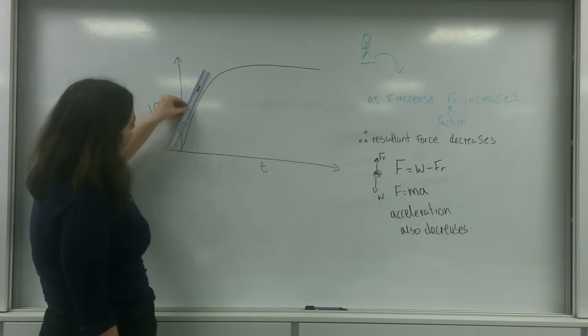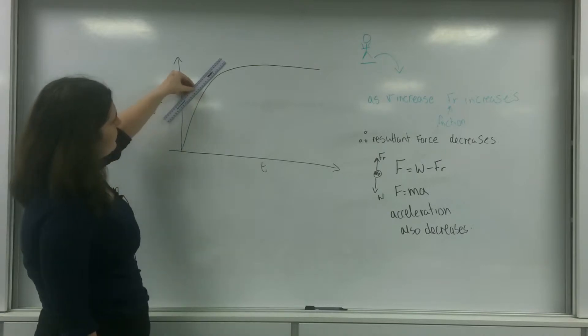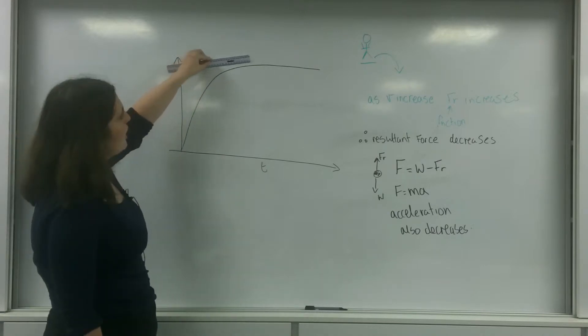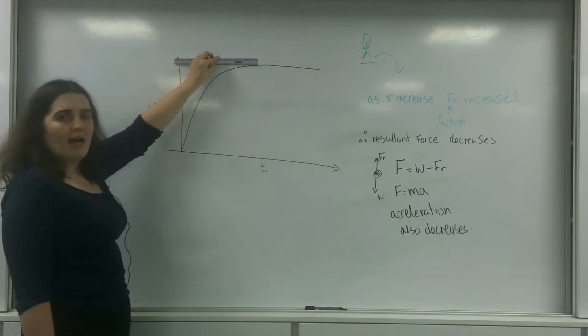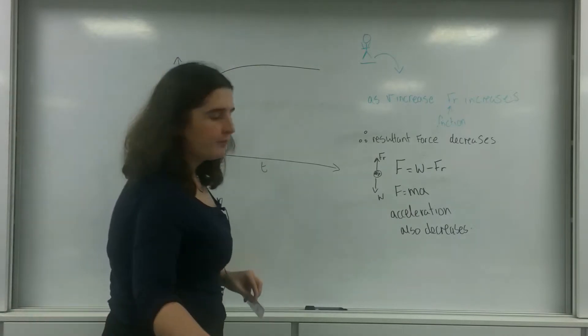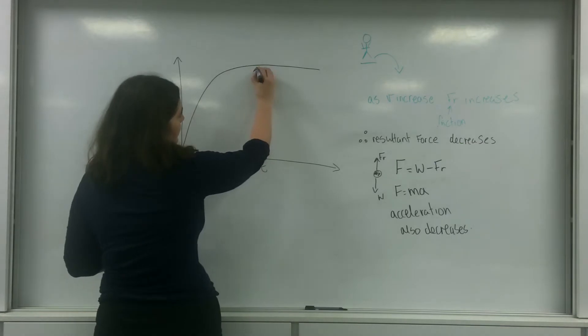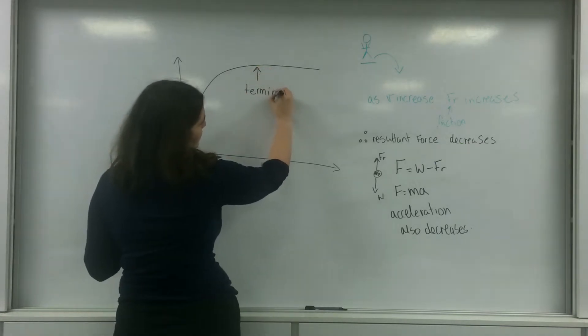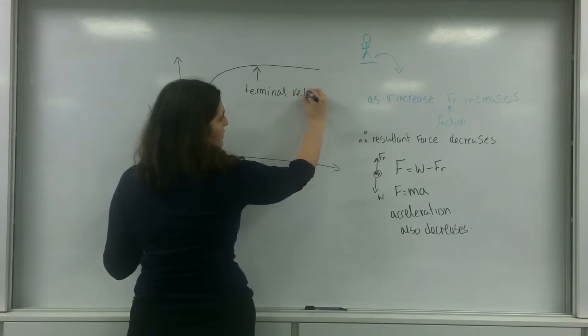As I reach this point here, as you can see, the steepness of this gradient gets lower and lower and lower to the point where I have no gradient at all. And this here is the terminal velocity.